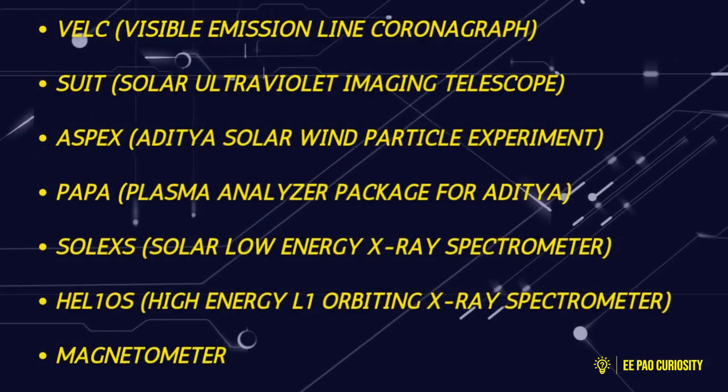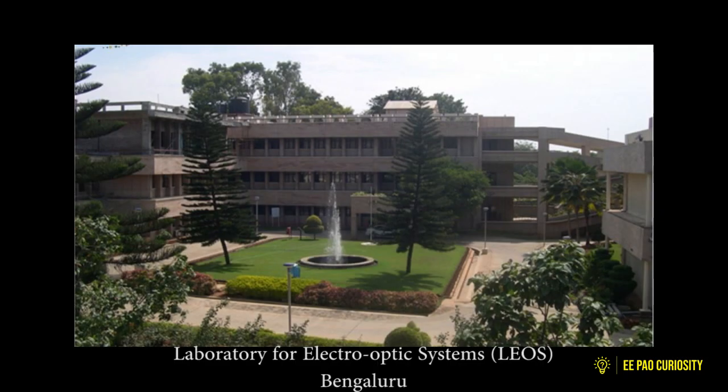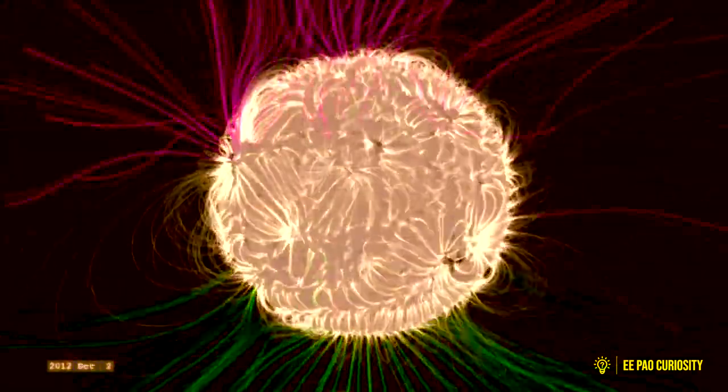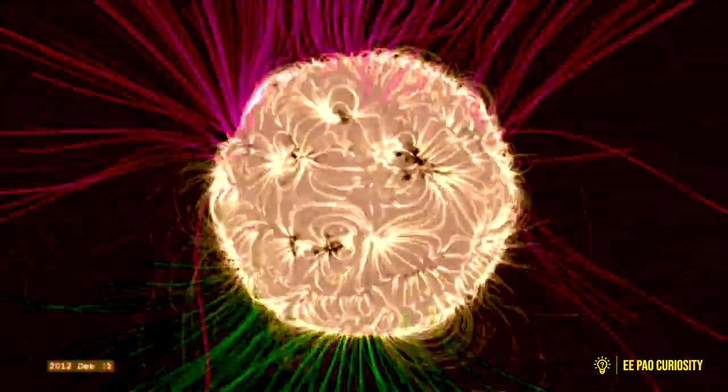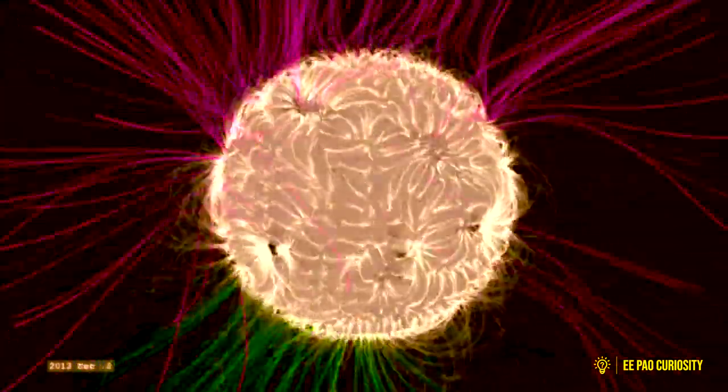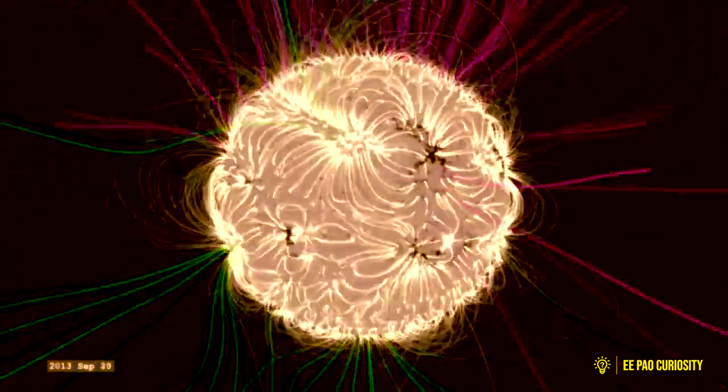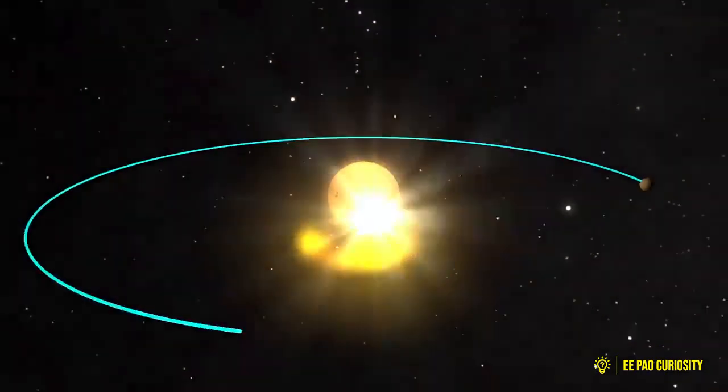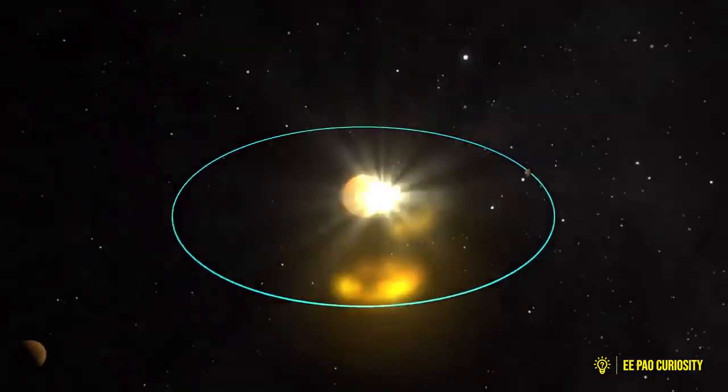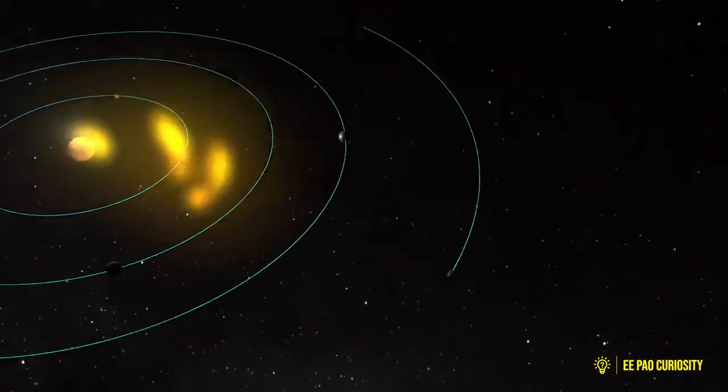Number 7: Magnetometer. It is also jointly developed by the Laboratory for Electro-Optic Systems Bengaluru and ISRO Satellite Center to measure the magnitude and nature of the interplanetary magnetic field. The interplanetary magnetic field, commonly referred to as the heliospheric magnetic field, is a part of the Sun's magnetic field that is dragged out and carried into interplanetary space from the solar corona by the solar wind to flow and fill the solar system.